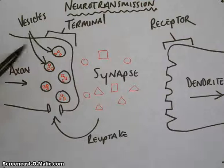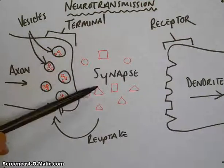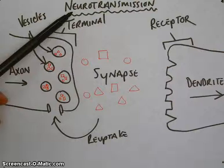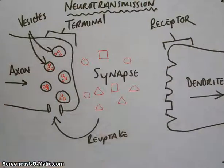It's easy to confuse neurons, which is the cell, neurotransmitters, which are the chemicals, and neurotransmission, which is the entire process. So try to keep those three different terms separate. And hopefully this will summarize a pretty basic way of the way neurotransmission works. It can get significantly more complicated for the sake of this class, but that's really all you need to know about neurotransmission.